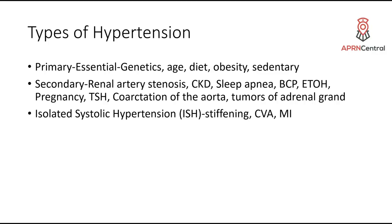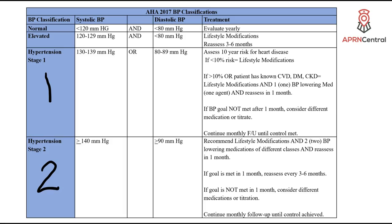The new AHA blood pressure classification has changed. One of the biggest changes is that there's no longer 'pre-hypertension' — they're calling it what it is: elevated blood pressure. The other change is in the numbers. We moved from 140 over 90 as the start of hypertension; they've dropped it down. Hypertension now starts at greater than 130 systolic and greater than 80 diastolic.